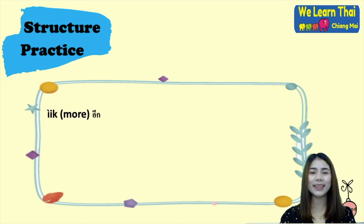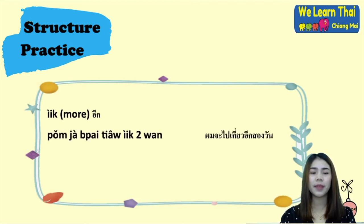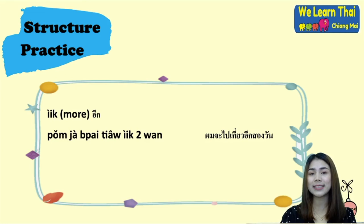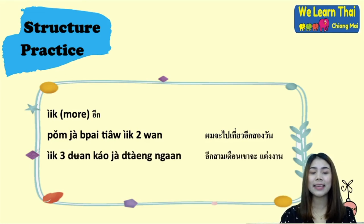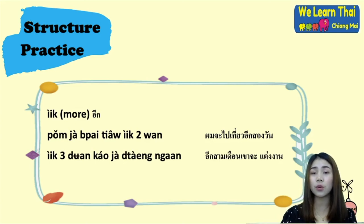The next word is อีก (ik), meaning 'more' or 'in' a duration of time. For example: ผมจะไปเที่ยวอีกสองวัน — 'I will go on a trip for two more days' or 'in two days.' อีกสามเดือนเขาจะแต่งงาน — 'In three months, he/she will get married.'